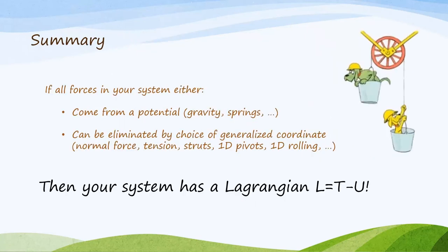In summary, here's the relationship between Lagrangian mechanics and Newtonian mechanics. If in your Newtonian mechanics description, every force you need either comes from a potential, like gravity or springs, or can be completely eliminated by choosing a generalized coordinate, then your system has a Lagrangian L equals t minus u.